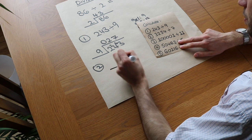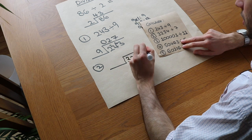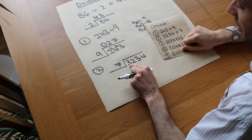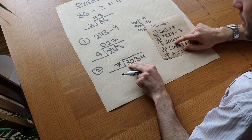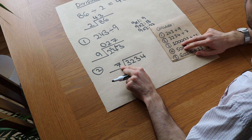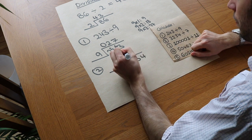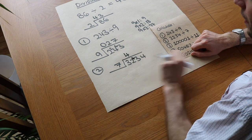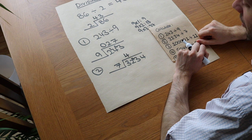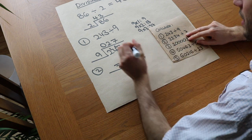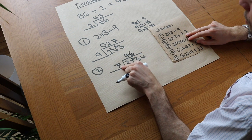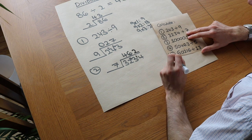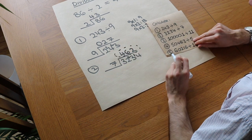Next question: 3,234 divided by 7. We set up the bus stop with 3,234 on the right and 7 on the left. How many times does 7 go into 3? Zero times, so we move on to: how many times does 7 go into 32? 7×4=28, which is the most we can have without exceeding 32, so it goes in 4 whole times with a remainder of 4. How many times does 7 go into 43? The closest multiple of 7 below 43 is 42 — that's 6 times — with 1 left over. And how many times does 7 go into 14? Twice. So the answer is 462.